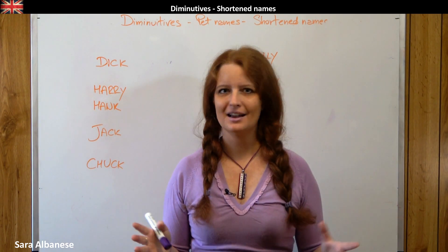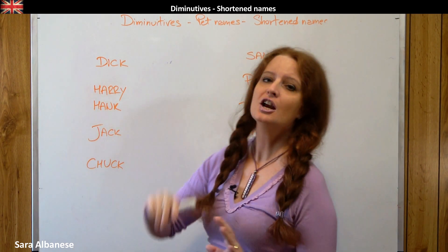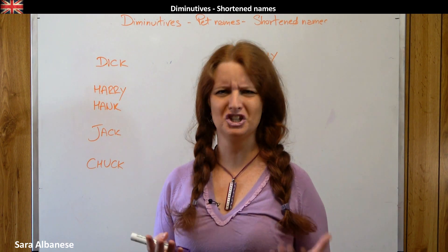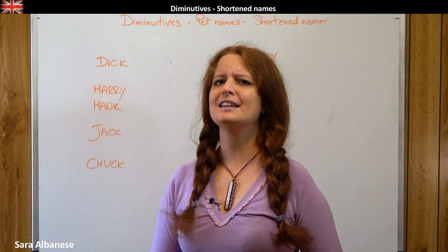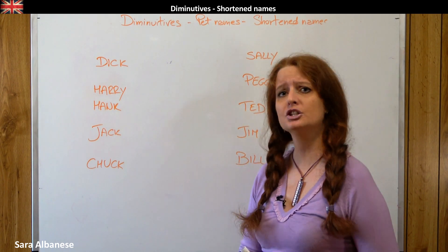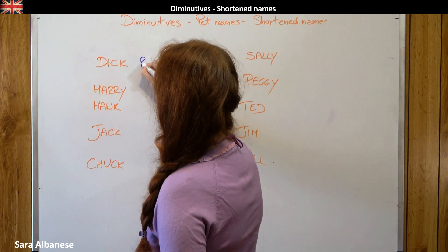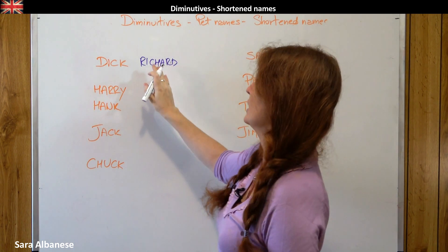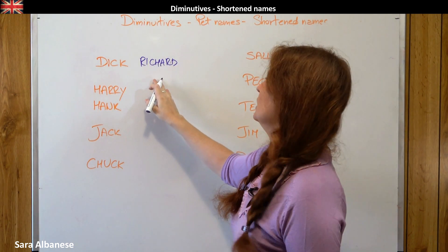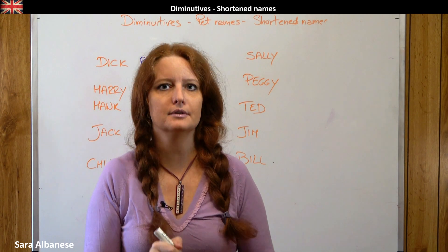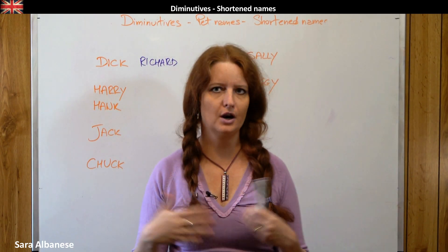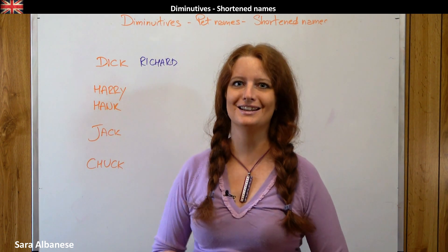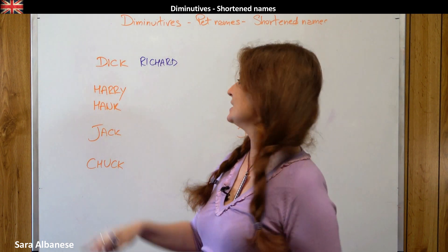Let's start with the first one: Dick. No jokes, no innuendos here. Dick is a diminutive of a name that doesn't have much in common with it. The original name is actually Richard. Of course there are many different ways to shorten a name like Richard — for example, Rich is very common nowadays — but Dick was actually the original diminutive of Richard, and it's still very common today.